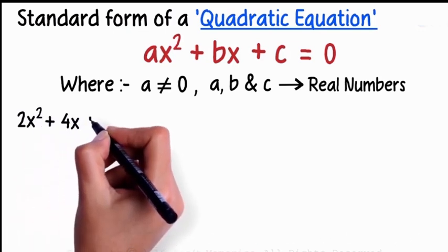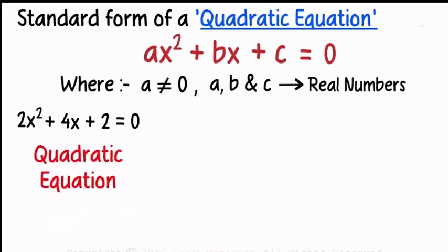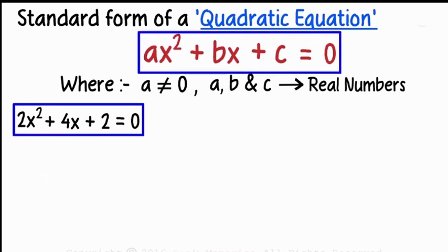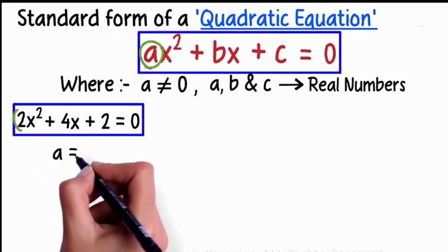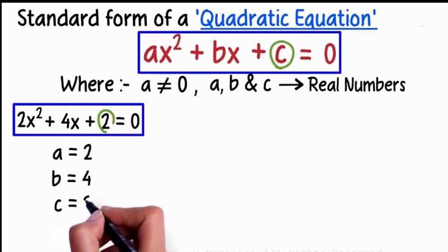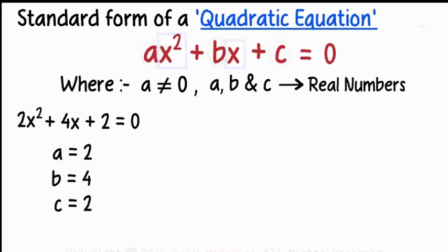For example, 2x² + 4x + 2 = 0 is a quadratic equation. Here, a is equal to 2, b is equal to 4, and c is equal to 2, where a is the coefficient of x², b is the coefficient of x, and c is the constant number in the quadratic equation.